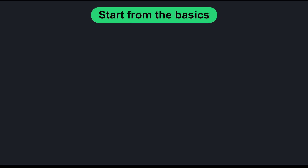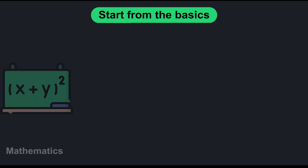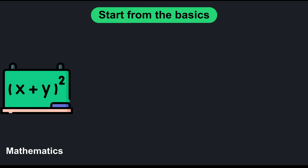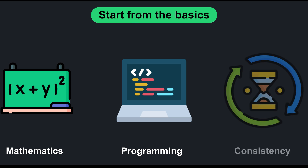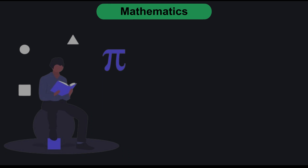Now let's cover the three steps you need to get into data science or machine learning. First is mathematics — it's very essential. Second is programming — once you know the basics of math and linear algebra, you can apply those through programming. Python is always recommended but not mandatory. Third is consistency — if you achieve consistency in the previous two, I can assure you that no one can stop you from entering the field within six to eight months.